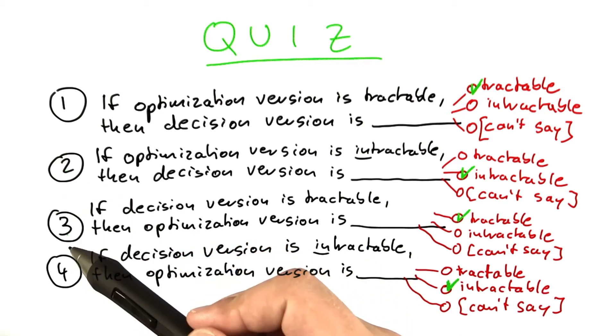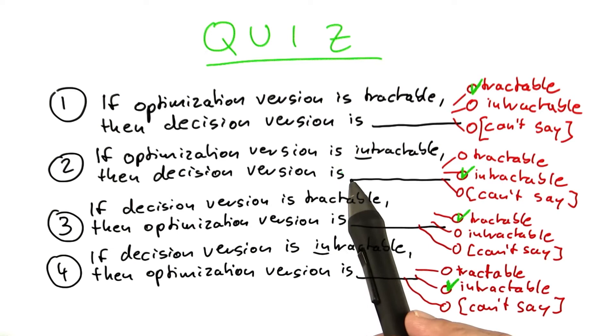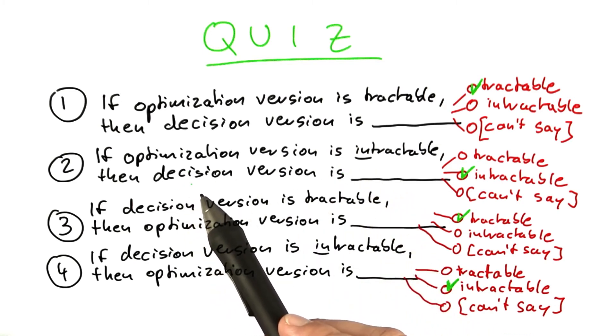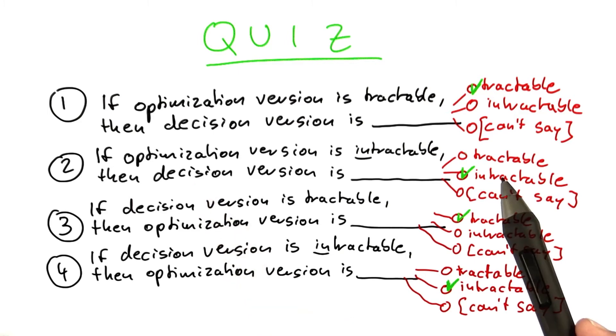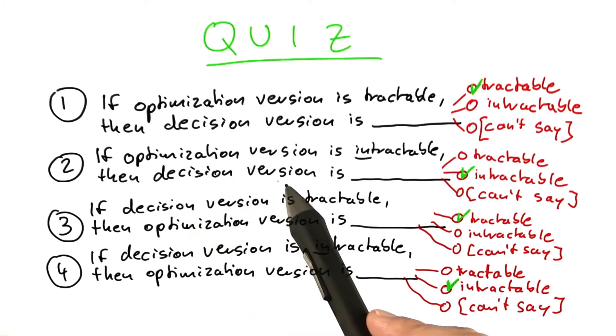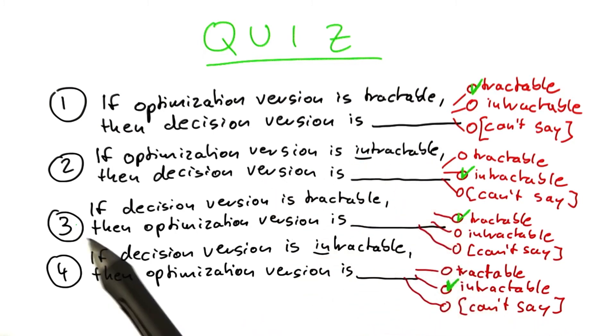The answers to questions two and three are a little less obvious. If you know the optimization version to be intractable, it could be the case that just having to say yes or no, given the size of the solution you're looking for, could be easier and tractable. You would have to show that if the decision version were tractable, then the optimization version would also be easy to solve, which is what I've asked you to think about in question three.